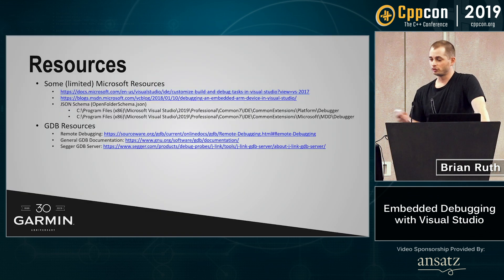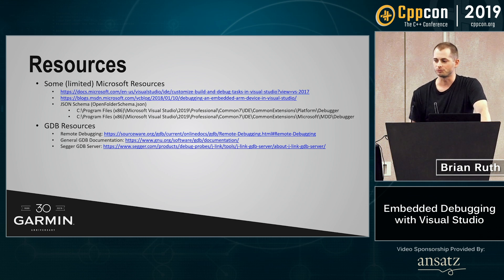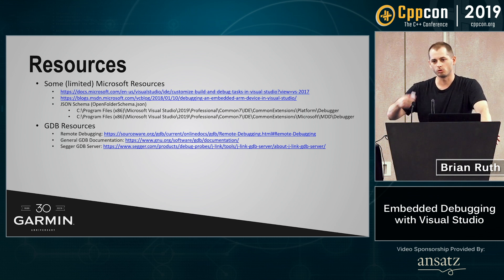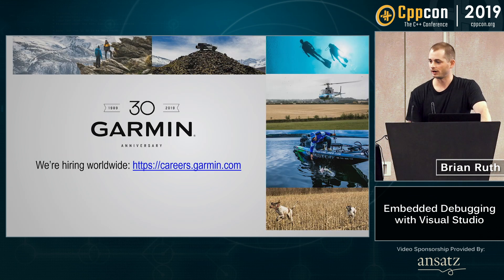For resources, Microsoft has a couple of blog posts going over how to do this type of thing, but the main thing to do is go into the open folder schema.json that's installed with Visual Studio — it describes all the different parameters and what they do. That's probably the best resource. And the obligatory: I work at Garmin, and we're hiring.